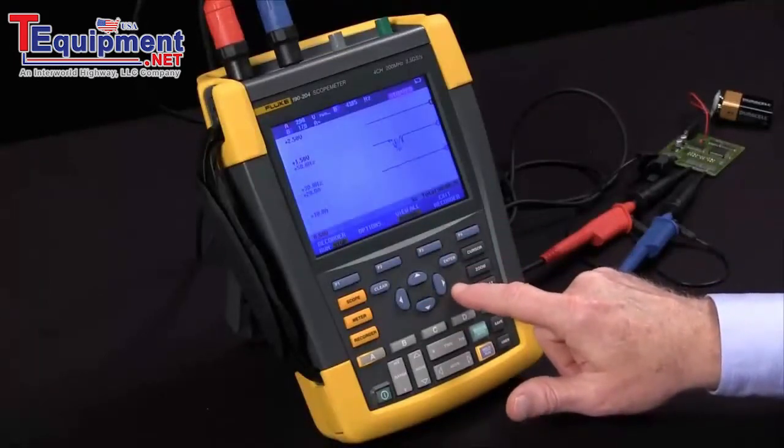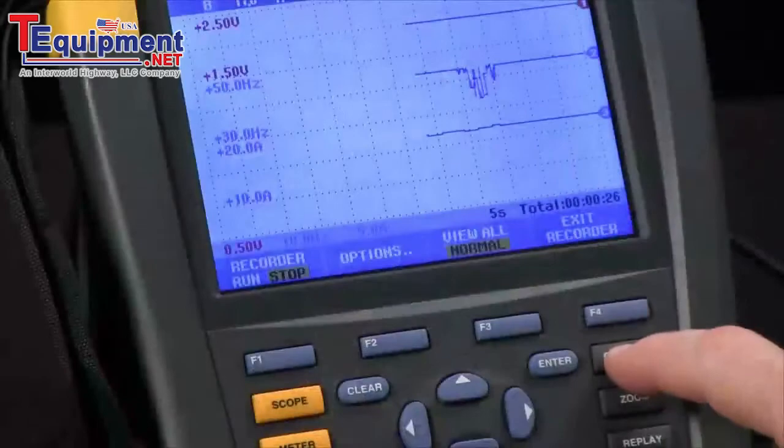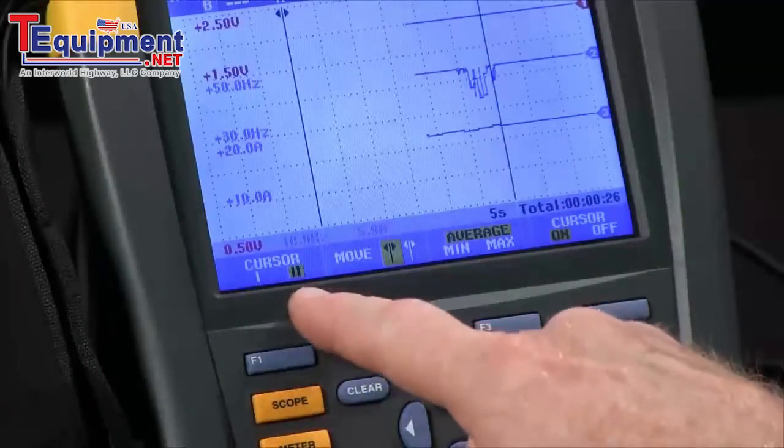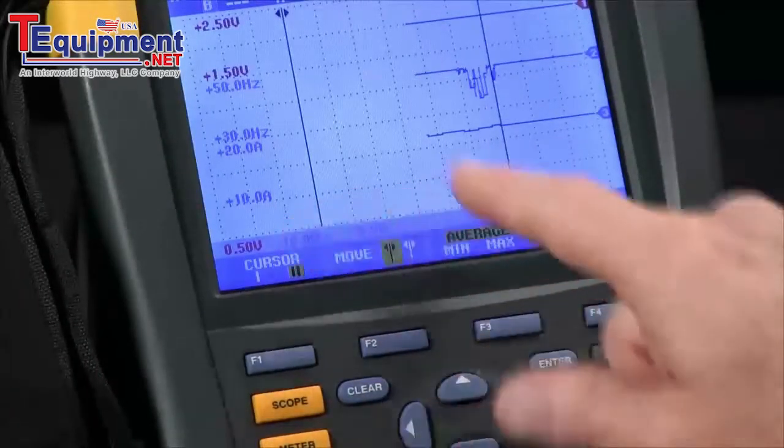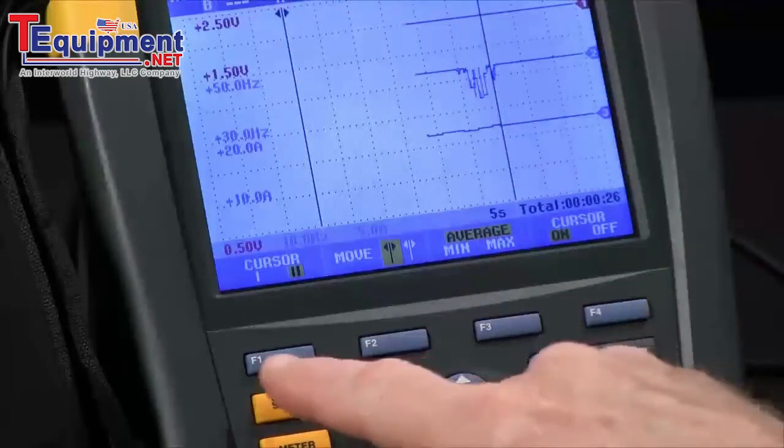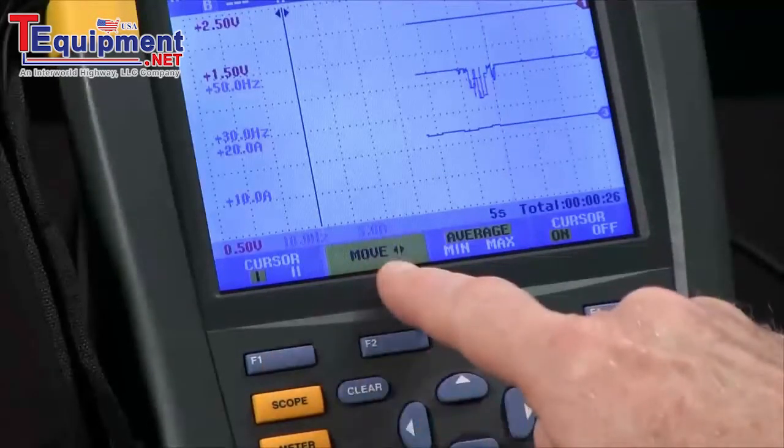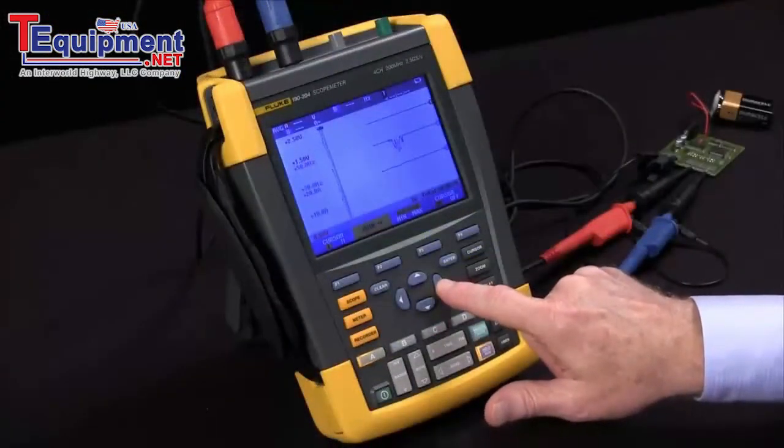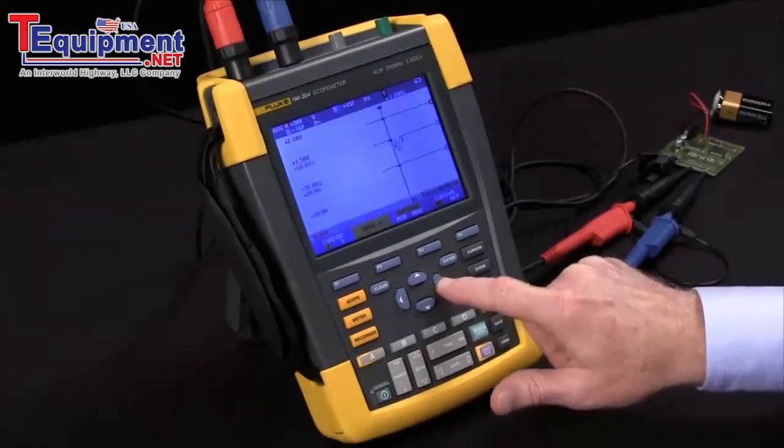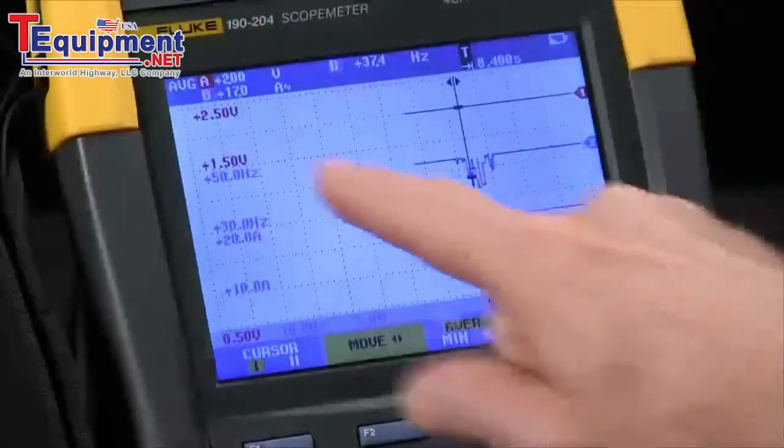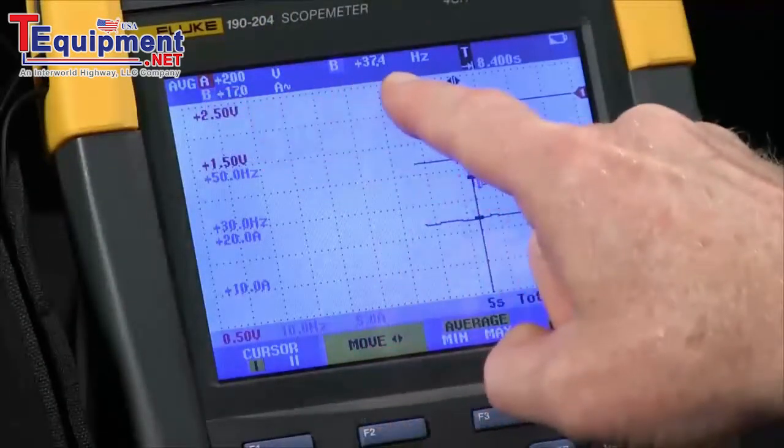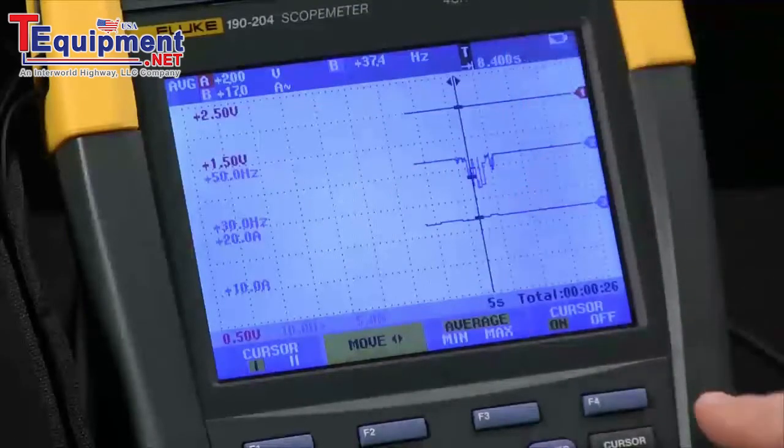When it comes to analysis, I might want to turn on a cursor. We start off with two cursors that give us a delta between the two positions. I want to choose a single cursor by selecting F1. And I can move that now with my arrow keys back onto the actual recording and see the voltage, frequency, and current at that point in time.